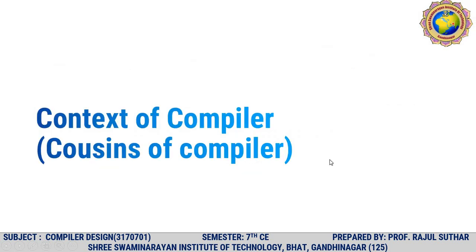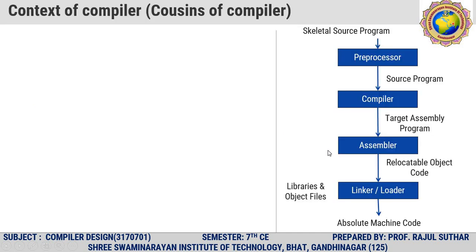The context of a compiler is called the cousin of compiler. The cousin of compiler covers the editor, preprocessor, compiler, assembler, linker, and loader. A skeletal source program first comes to the editor — we are all familiar with editors like Notepad or Notepad++. If we write documents we require Word or WordPad. These are all called editors, and various types of editors are available.